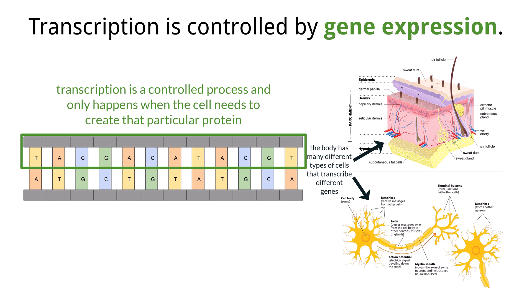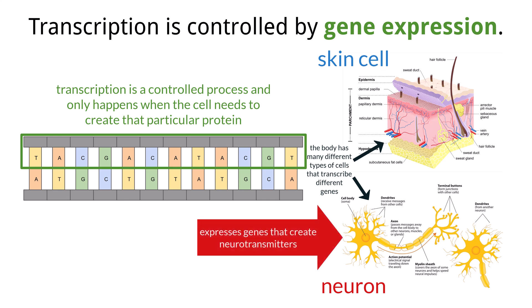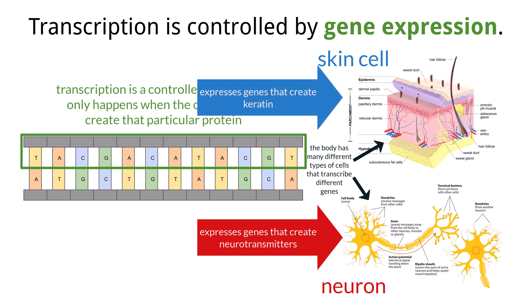Let's look at an example of two different cells, like a skin cell and a neuron. Both of these cells have the same set of DNA, and therefore the same set of genes, but each cell expresses different genes within the genome so they can function properly. The neuron will express certain genes to build neurotransmitters, and the skin cells will express certain genes to create keratin proteins. We would not see this the other way around because neurons do not need keratin, and skin cells do not need neurotransmitters.